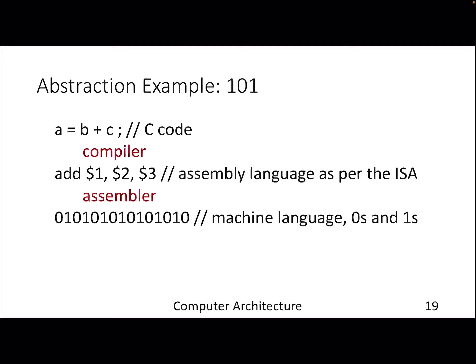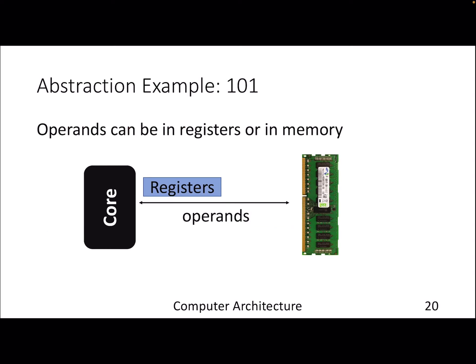To understand the abstraction, let's take an example of a simple arithmetic statement from a program. When that gets compiled, it generates assembly language that says something like 'add' using register names like $1, $2, $3 instead of variable names like a, b, c. Then an assembler converts that assembly language — which is driven by an ISA — into machine language: zeros and ones. So 'a = b + c' ultimately looks like a sequence of binary digits.